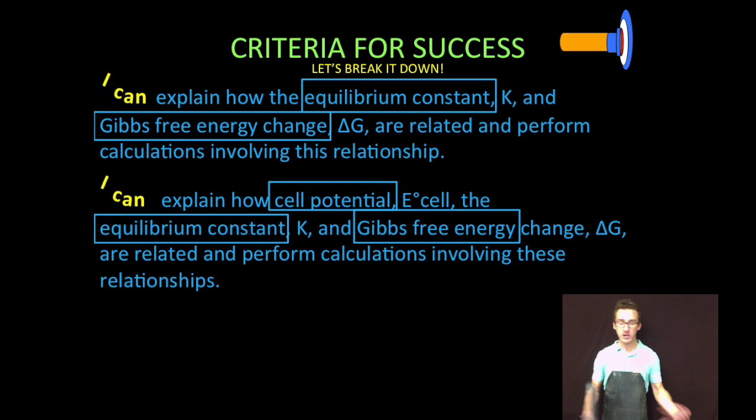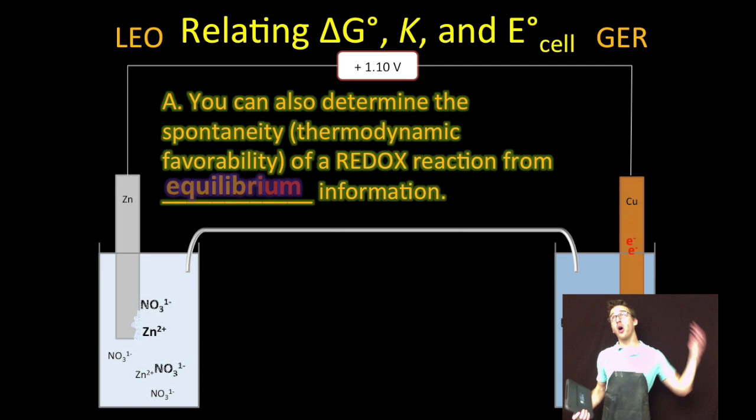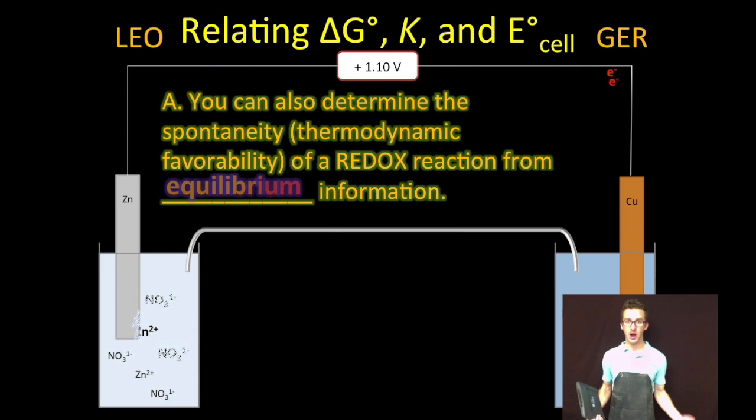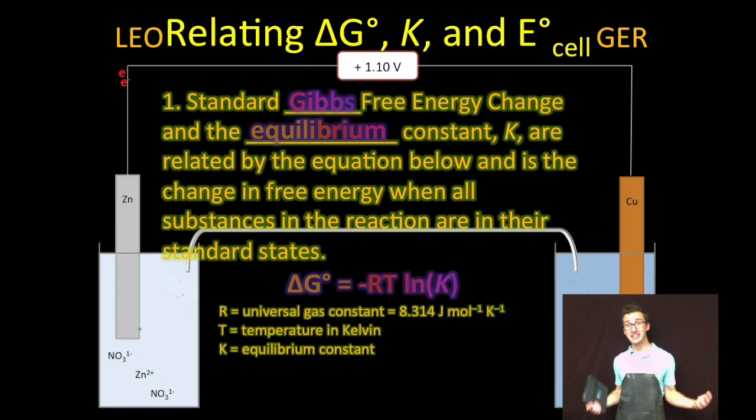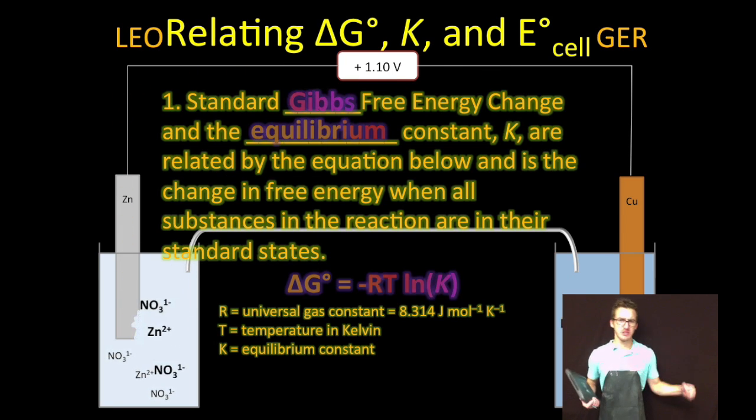So more equations, more calculator, more fun. So you can also determine spontaneity or thermodynamic favorability of a redox reaction from equilibrium information. And I know that we already know all about the equilibrium constant K, but you can relate Gibbs free energy change, Josiah Willard Gibbs, and the equilibrium constant by the following equation.